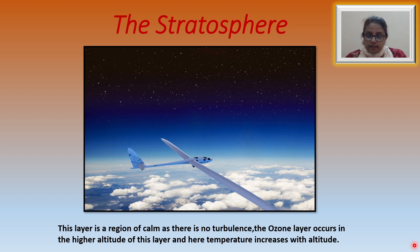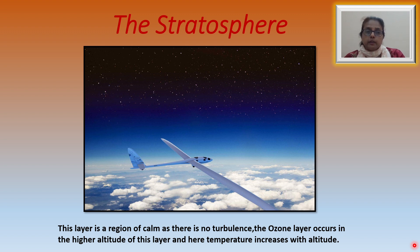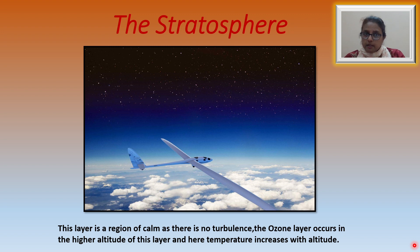This makes the stratosphere ideal for jet aircraft flying conditions. At higher levels, temperature increases with height due to absorption of ultraviolet radiation by ozone present in the layer. The temperature slowly begins to increase to 4 degrees centigrade. At about 50 kilometers, the temperature again starts to fall, marking the end of the stratosphere, known as the stratopause.